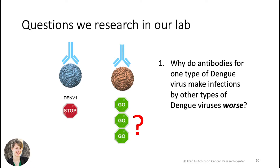Why do antibodies for one type of dengue virus make infections by other types worse? You might hear more about this on the tour with the work that Laura is doing to research antibody-dependent enhancement. Flaviviruses are very interesting because they are one of the uncommon cases where the antibody response, which we typically characterize as protective, can actually enhance infection with these specific viruses.